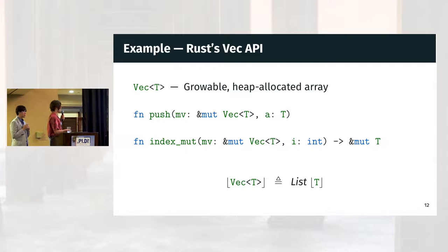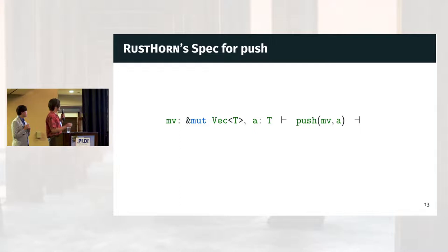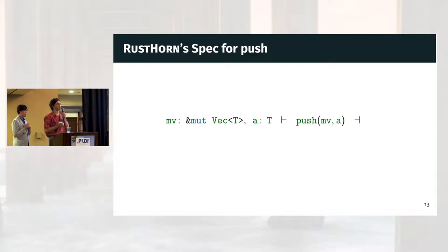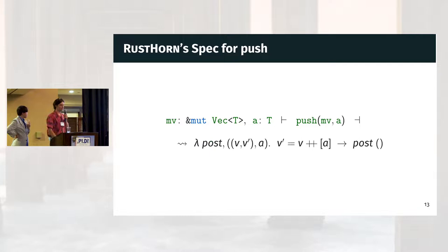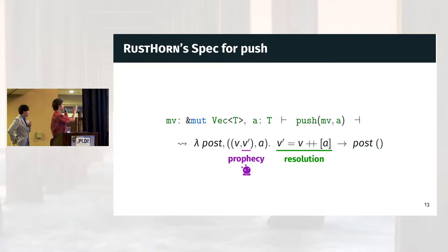We need to give a RustHornBelt-style representation to vectors — we represent them as mathematical lists of items. For push, we take a mutable borrow to a vector and the element to add, but we don't produce anything on the right-hand side because push doesn't return a result. After a call to push, we'd like to say that the vector pointed to by MV has been updated to contain A at its very end. We do this by resolving the prophecy of MV — the final value it will have — to the value it had at entry V with A appended. This does exactly what we would expect from push.